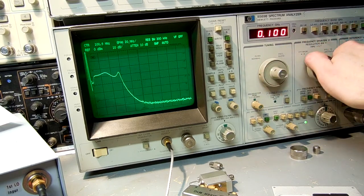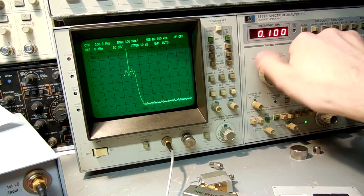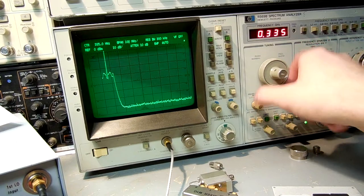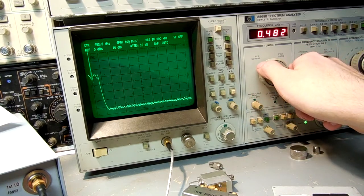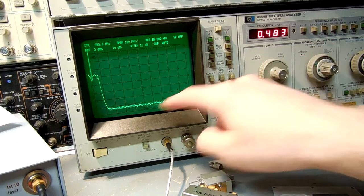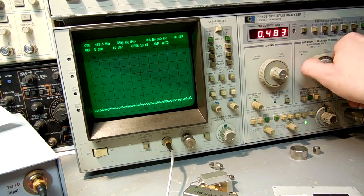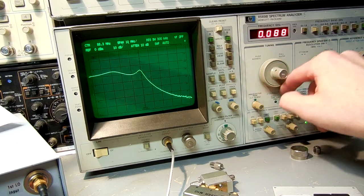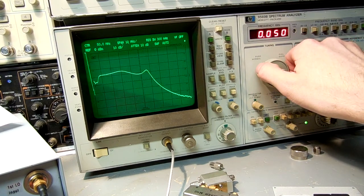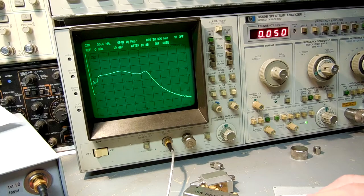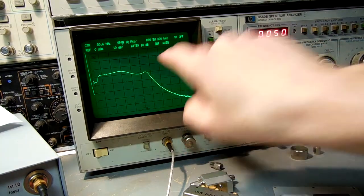It's 20 megahertz per division. You can see, 100 megahertz per division. You can see the filters really kick in good.